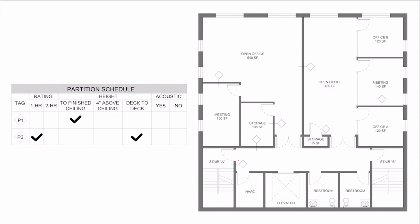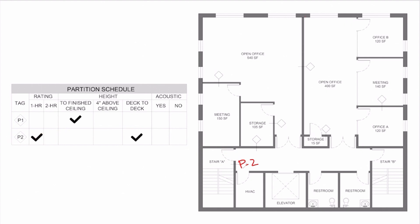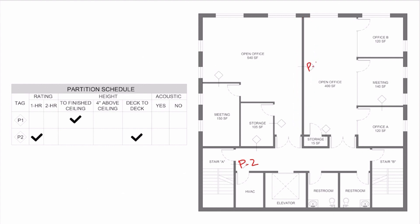Let's place the P2s in the correct spots first, and then that can help us inform what's going to be P1. We know that fire stairwells always have to be fire rated, so at Stair A we can put P2. On the actual exam it will probably be a drag and drop situation. We also know that any tenant demising walls — the wall between two tenants — are going to be P2. And any walls dividing a tenant space and a public corridor space will also be tagged P2.